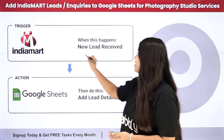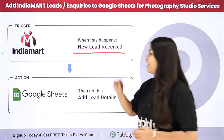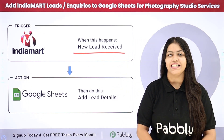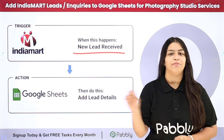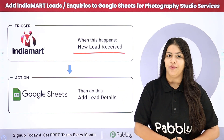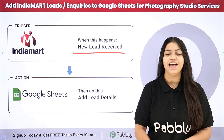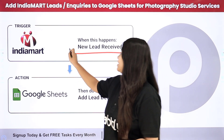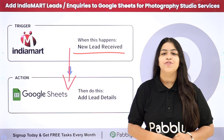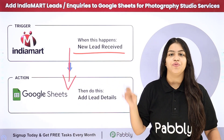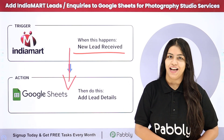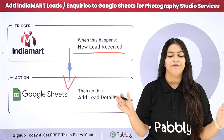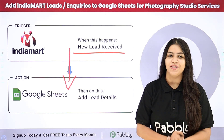As soon as a new lead is received from my India Mart account, I want to add that lead's details into my Google Sheets so that my sales team can follow up quickly and efficiently. To do this we are going to create a connection between India Mart and Google Sheets, and to create this connection without knowing any programming or coding language, we are going to use Pabbly Connect — it is an amazing automation software.